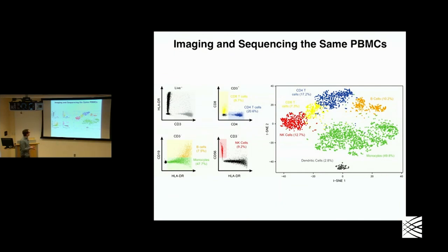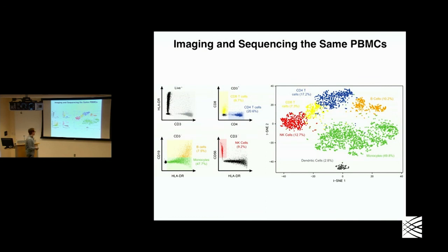We've already taken one step towards this. The PBMCs I showed you earlier — before we sequenced them, we actually imaged them. The one thing we haven't been able to do yet is say that this individual CD8 T cell in imaging space is this CD8 T cell in sequencing space. But we're actively working on ways to pre-label the devices so that we can barcode the beads with position on the array.